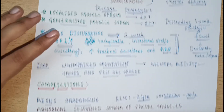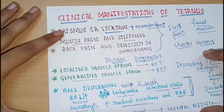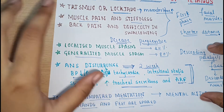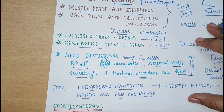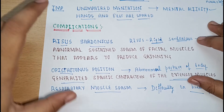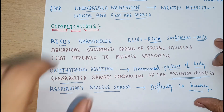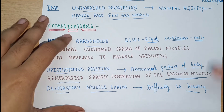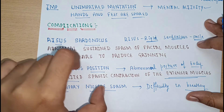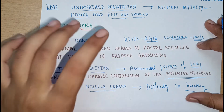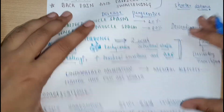This covers the clinical manifestations of tetanus. The important terms to remember are: trismus — lockjaw; risus sardonicus — a rigid smile where the person appears to be grinning; and opisthotonus position — where there is spastic contraction of the extensor muscles.